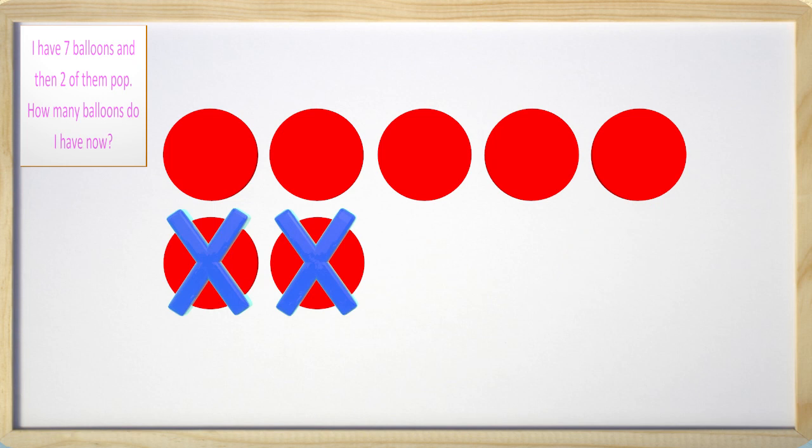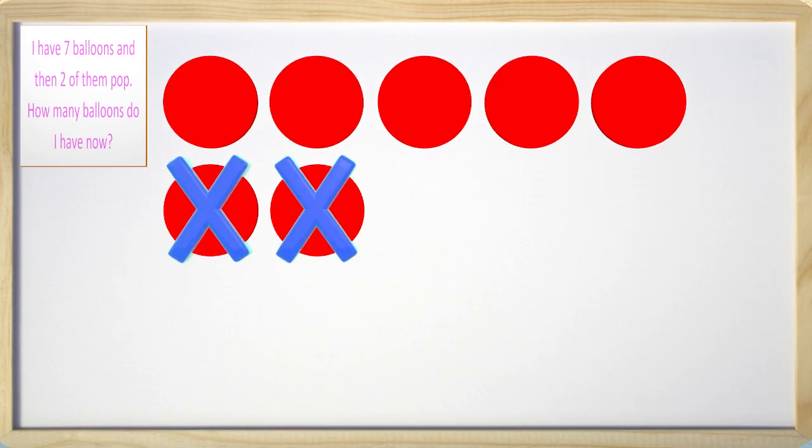Now the rest of the circles that do not have an x are the balloons that I have left. This is an awesome way to figure out the math problem. We need to write an equation to go along with this word problem.